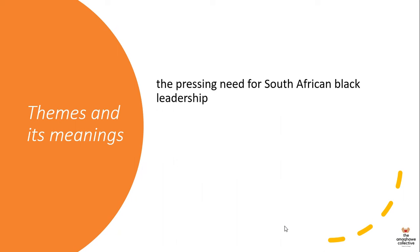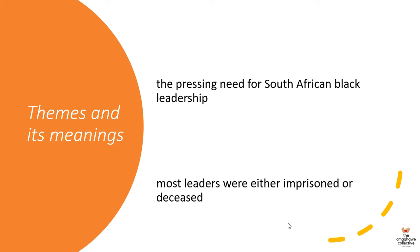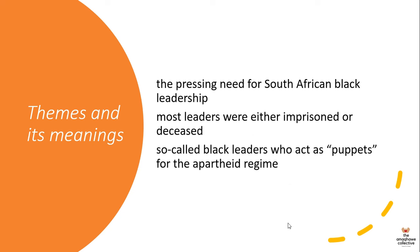The play sheds light on the pressing need for black South African leadership — for black South Africans to take the forefront of the struggle. When this play was written, many struggle heroes were either dead or incarcerated. It was also a call for so-called black leaders who acted as puppets for the apartheid regime to step up and take ownership. Someone critiqued very harshly in this play was Archbishop Desmond Tutu.